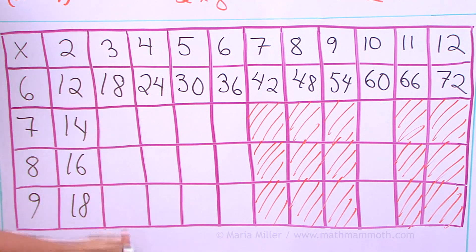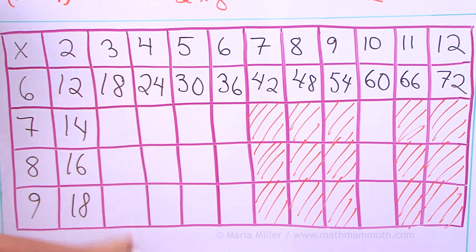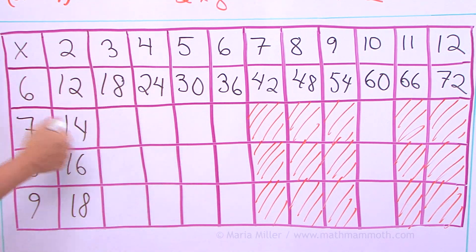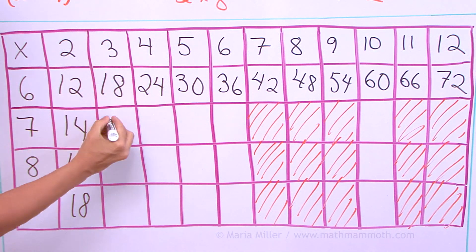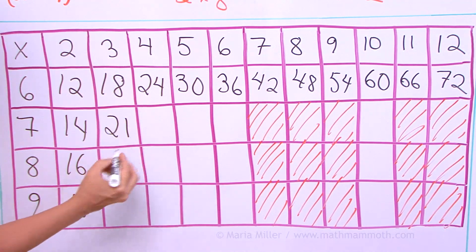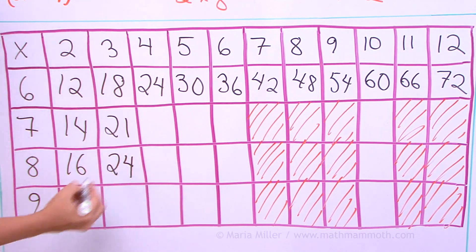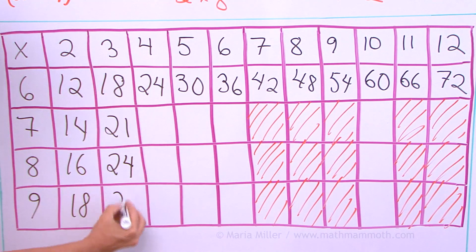And here it goes by 3s. The skip counting pattern by 3s. 18. Then 7 times 3 goes here, 21. And then 8 times 3, 24. And then 9 times 3, 27.